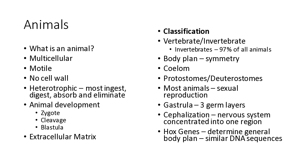Today's topic is the animal kingdom. We've already covered plants, fungi, bacteria, and protists, and now we move on to animals. To be part of the animal kingdom, organisms must first be multicellular — there are no single-celled animals. At some stage in their life they need to be motile, and they don't have a cell wall. They are also heterotrophic, meaning they cannot photosynthesize and must ingest their food.